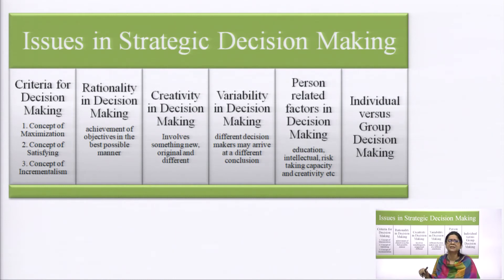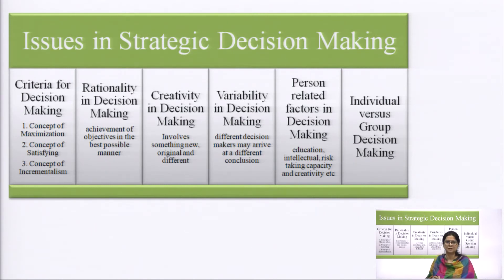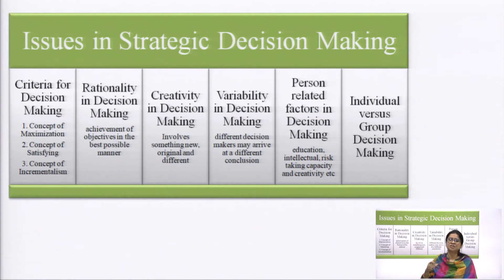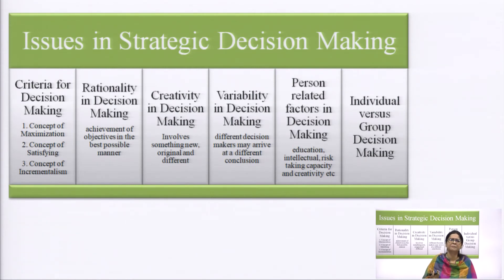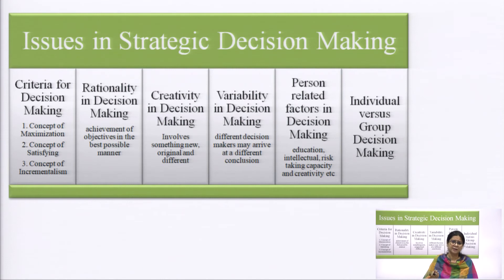The second issue is rationality in decision making. Rationality means something practically possible and logical — achieving the objective in the best possible manner. For example, if your target is 10 percent profit but you incurred 5 percent cost, your final profit is only 5 percent. So rationality is possible only when the objective is achieved in the best possible manner without incurring excessive costs.